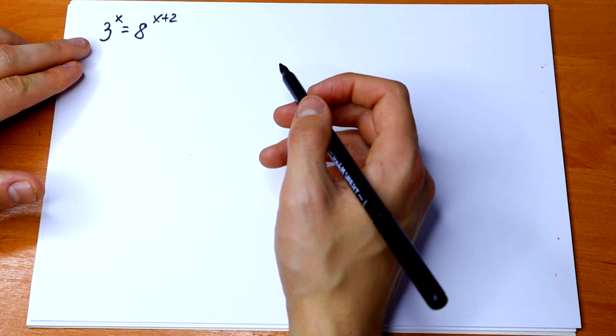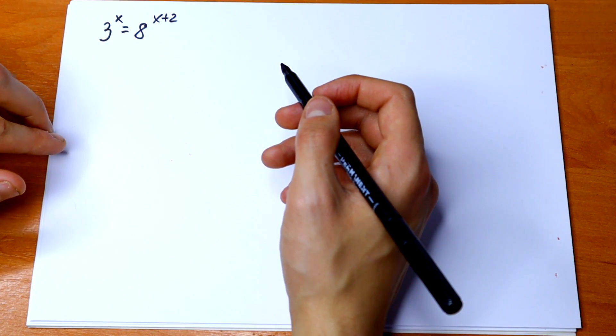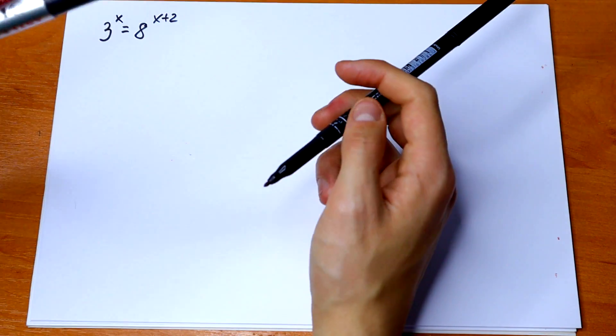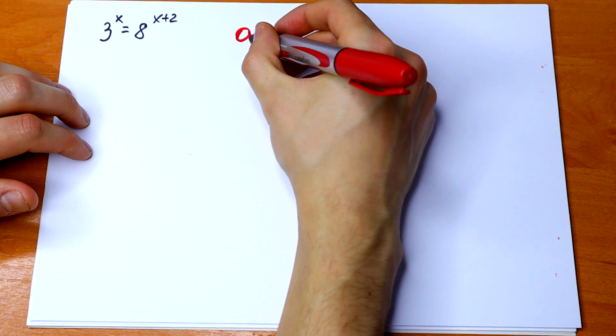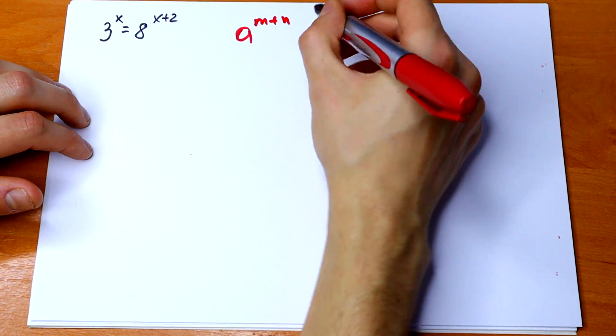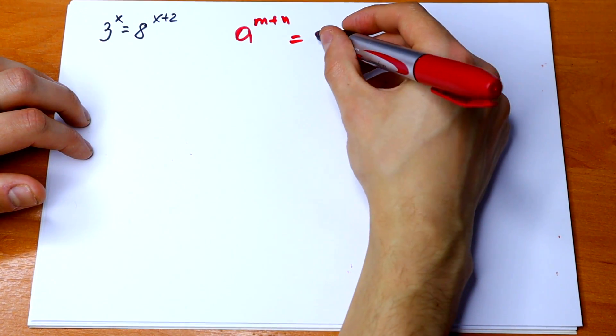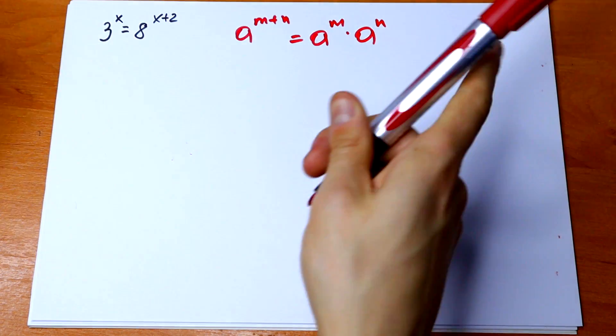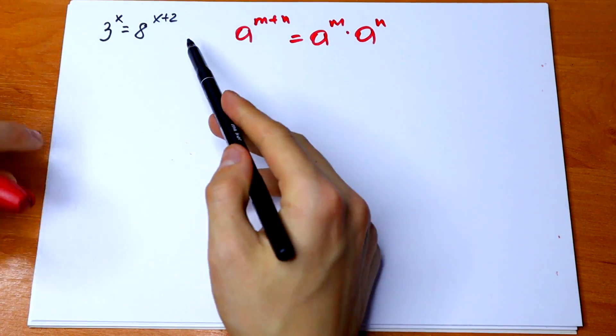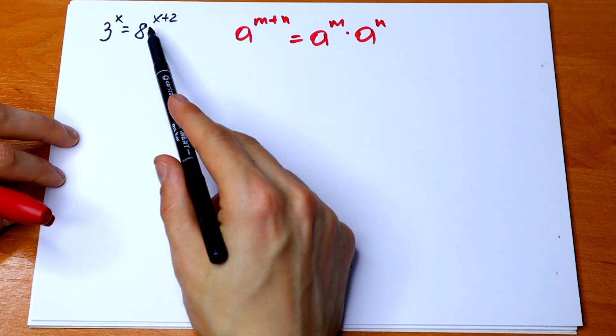So we have 3 to the power x equals 8 to the power x plus 2. For sure we can use the first rule to solve this. We know that if we have a to the power m plus n, it will be equal to a to the power m times a to the power n. So we can break this exponent using this rule.